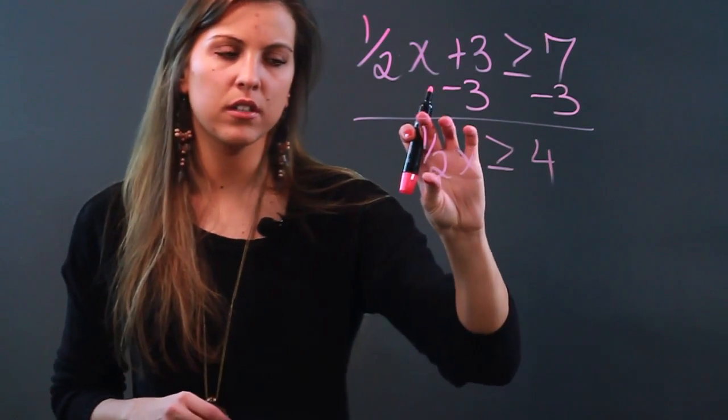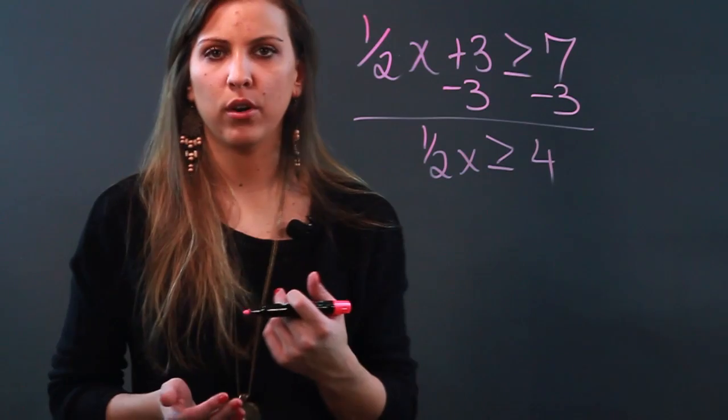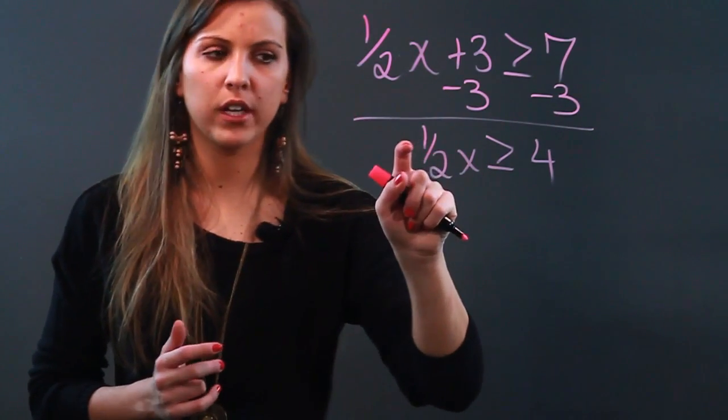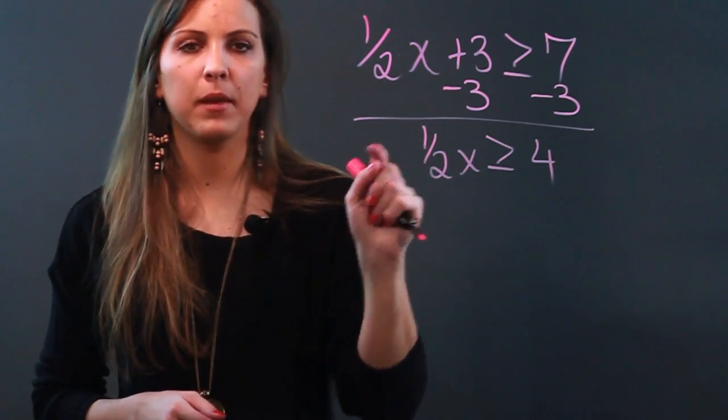Now to get rid of this fraction, all you have to do is multiply both sides by the reciprocal. What I mean by reciprocal is you just flip the fraction upside down. So whatever was in the numerator will now become the denominator and whatever was in the denominator will now become the numerator.